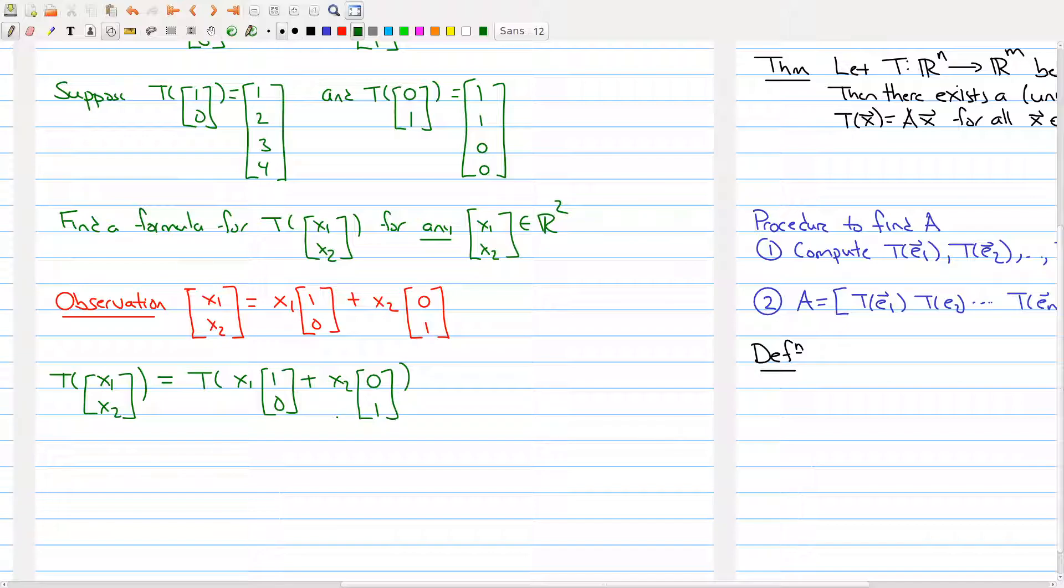Now we've blown it apart, but now we can hit it with properties of a linear transformation. Because we're doing a sum of two vectors, this is equal to T(x1 times [1,0]) plus T(x2 times the vector [0,1]).